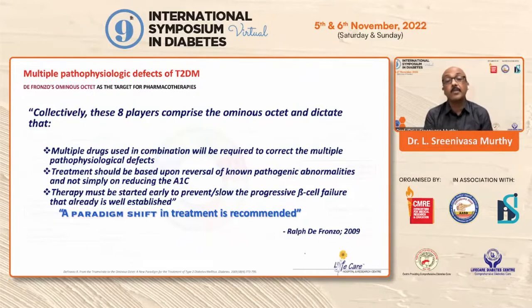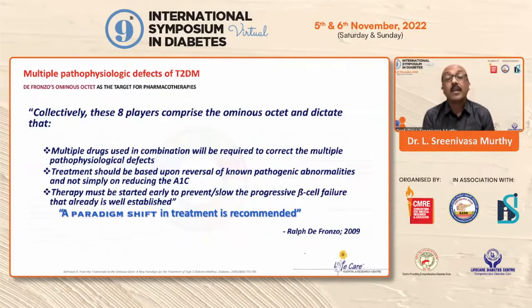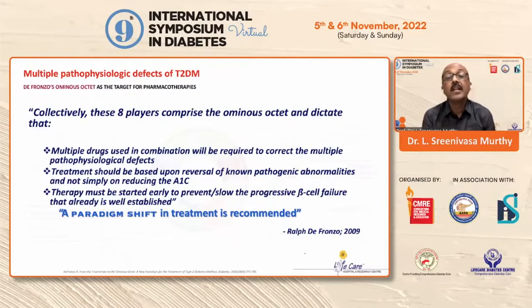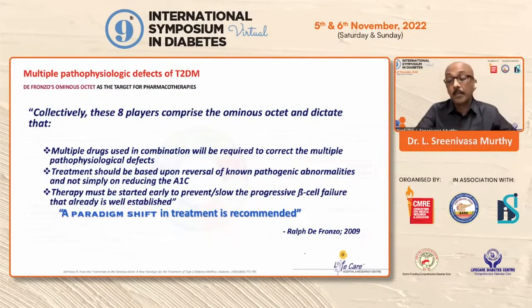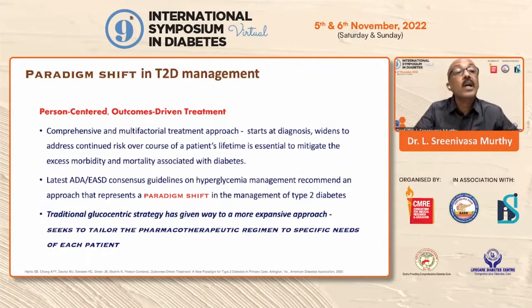Even today, the glibenclamide tablet, which used to be used, is a very potent glucose-lowering agent, but we have almost stopped using it. We never use these molecules now. This is where we have moved on to SGLT2 and GLP-1s — because we are not targeting only the glucocentric approach; we are targeting the cardiometabolic approach. Person-centered, outcome-driven treatment is the key.